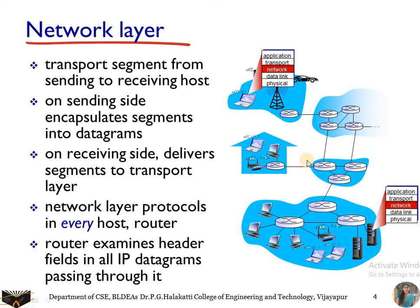Here we have an example. The source and destination are in different networks. At the source, the application layer sends data to the transport layer, which converts it into segments and passes them to the network layer. The network layer encapsulates those segments into datagrams by adding a header, including the IP addresses of the source and destination, then passes them to the data link layer and physical layer. The network layer provides host-to-host, or source-to-destination, end-to-end delivery.